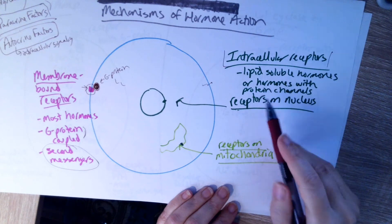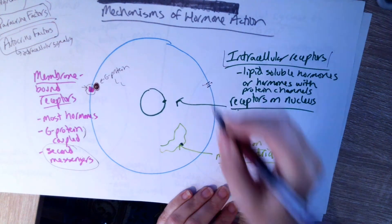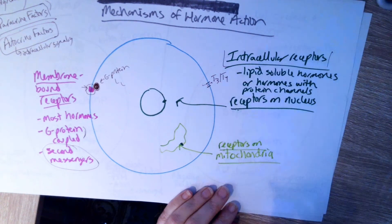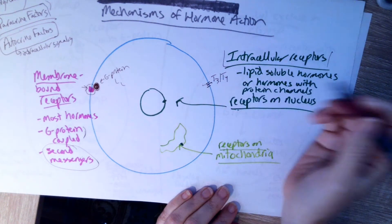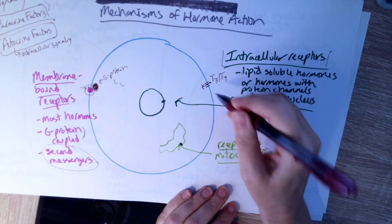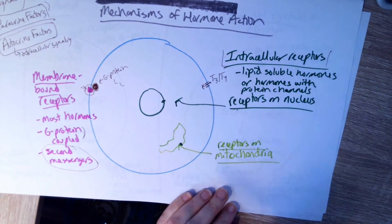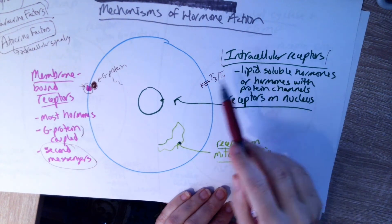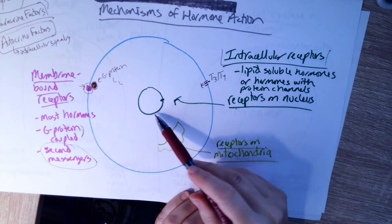There are also hormones that have specific protein channels for them. For example, our thyroid hormones — T3 or T4 — have receptors or channels that allow them to pass through the cell membrane and bind to receptors inside the cell. If we do have receptors inside the cell, they're going to be in one of two places.